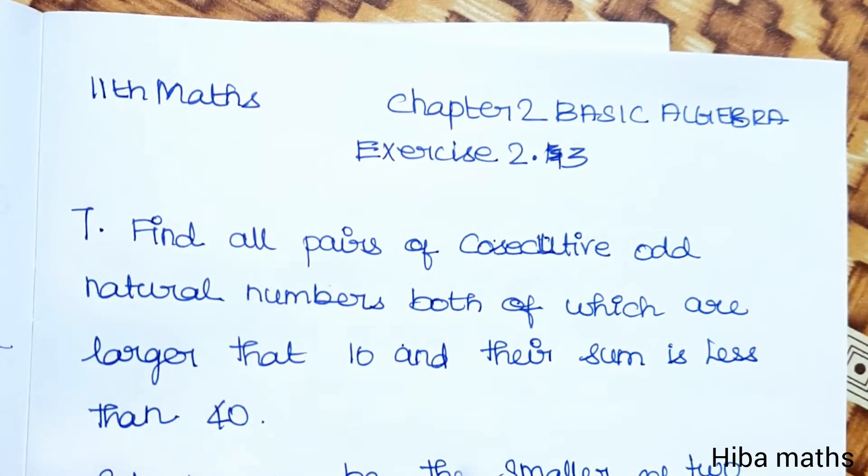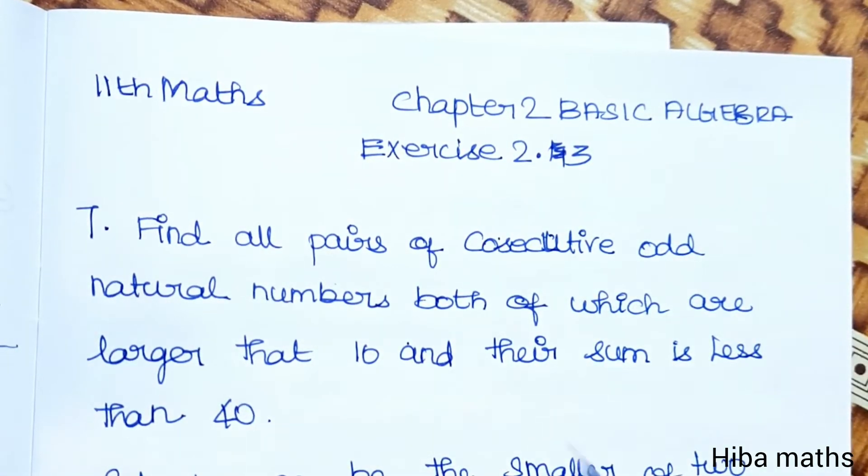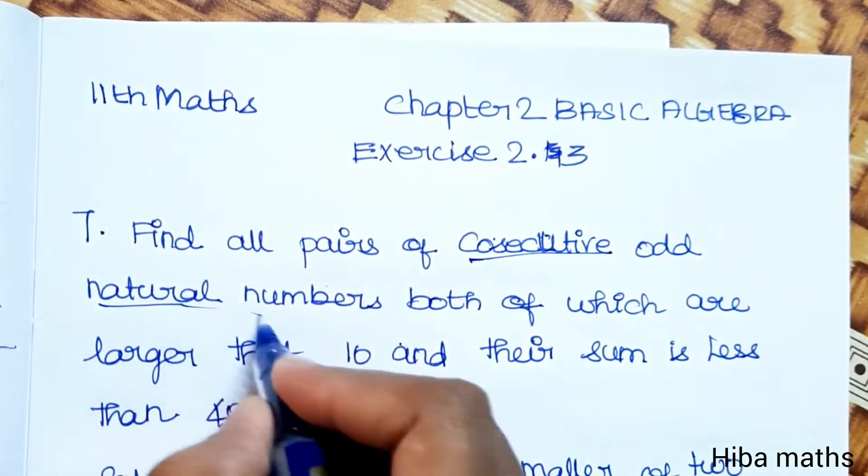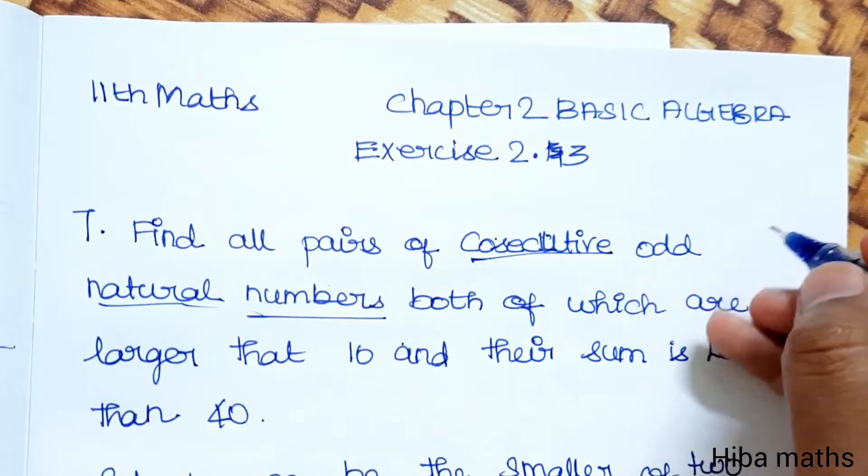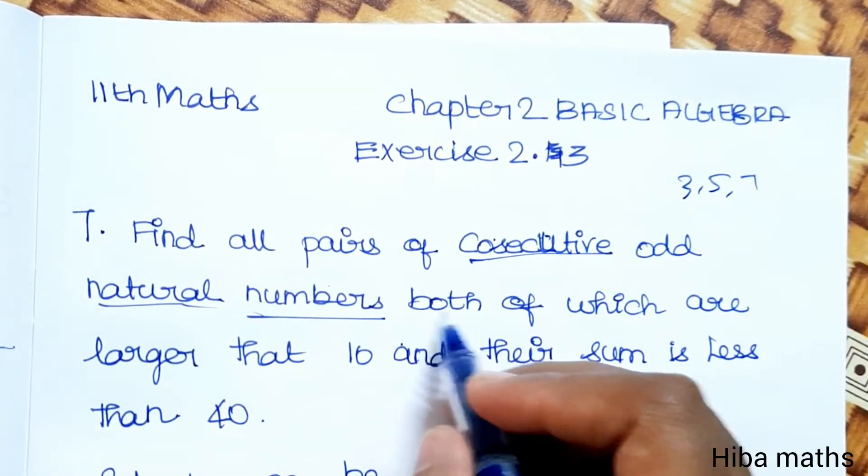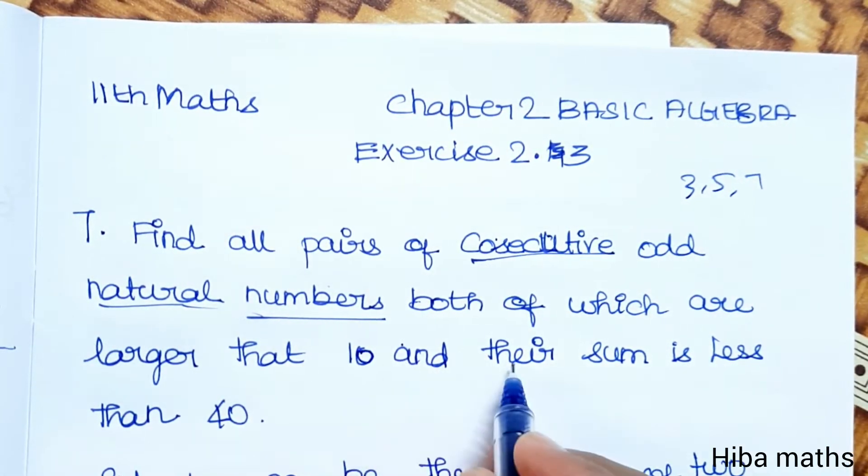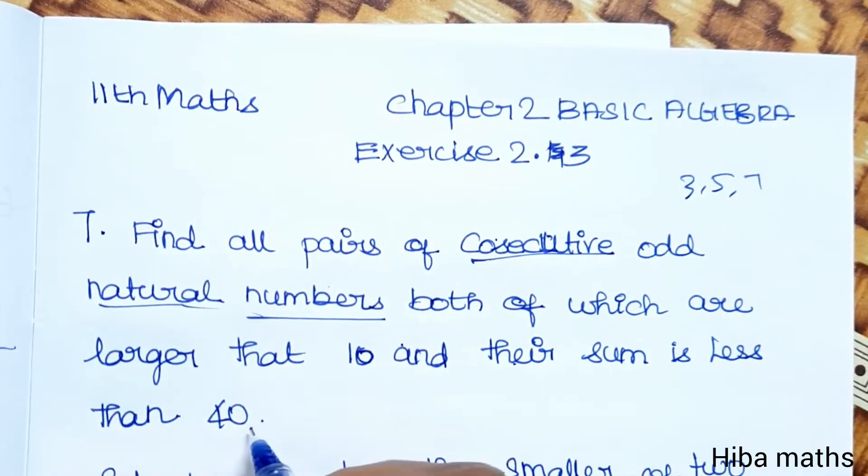Basic Algebra, 7th Question: Find all pairs of consecutive odd natural numbers—3, 5, 7 are examples—both of which are larger than 10 and their sum is less than 40.